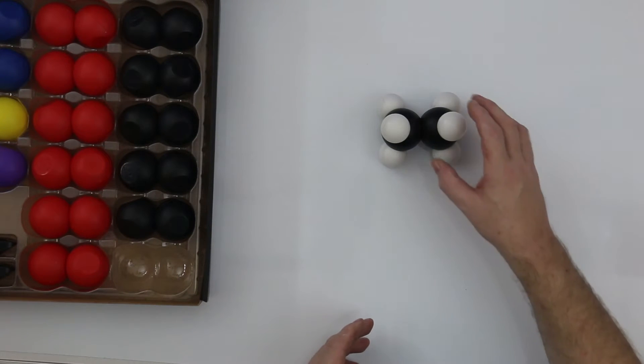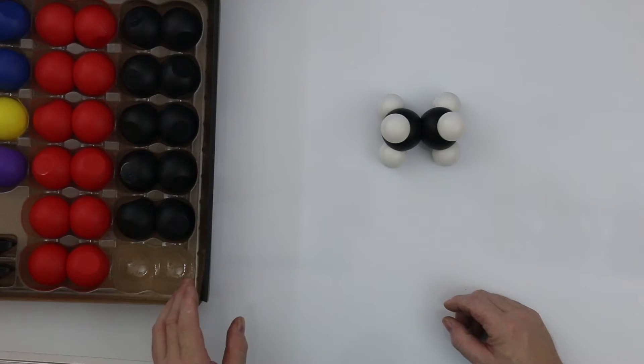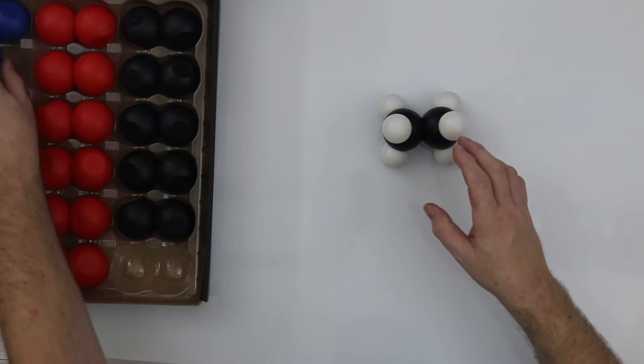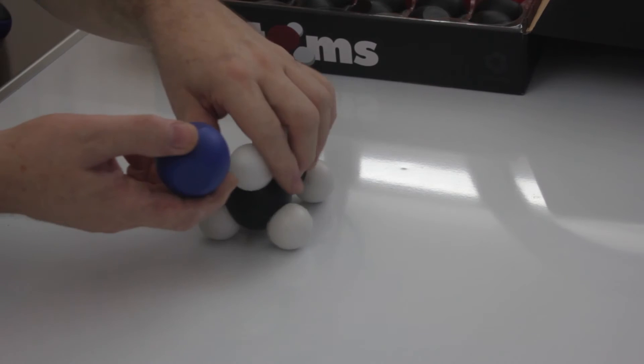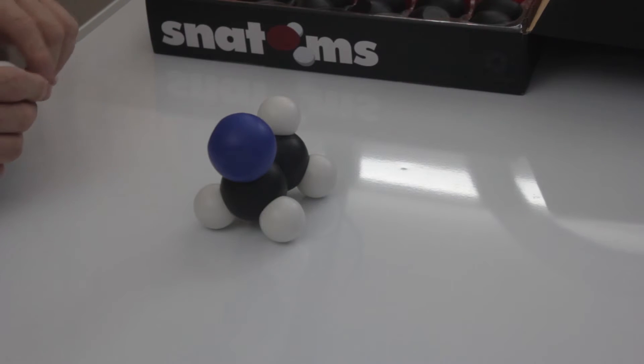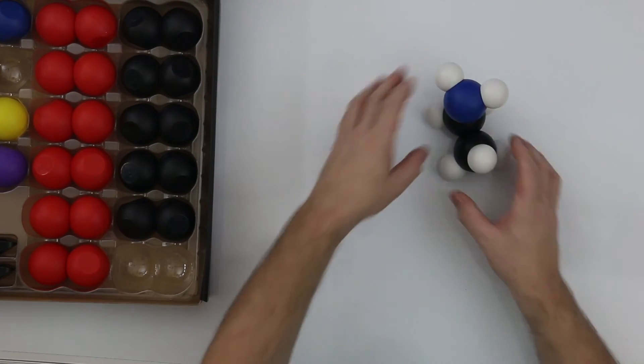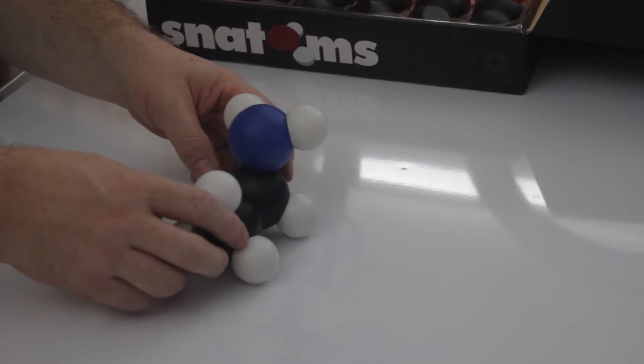Starting off with ethane, what I'm going to do is add a different type of group onto this. And we can play with a nitrogen. And putting a nitrogen on here gives us an amine group. So this is ethylamine.